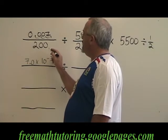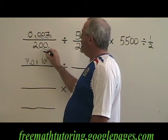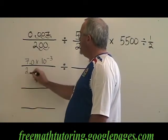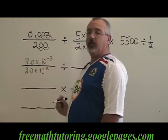With the 200, the decimal is here and I am moving it 1, 2 spaces to the left. So it becomes 2.0 times 10 to the positive 2.